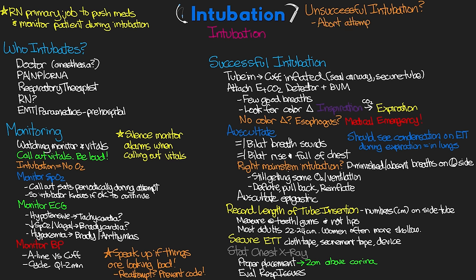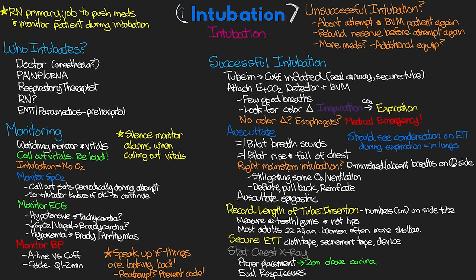In cases of unsuccessful intubation, abort the attempt and resume bag valve masking the patient to rebuild the reserve used up during the attempt. This may take a few minutes, and additional medication may be needed. Additional equipment such as the GlideScope or bougie may be requested if not already used, and anesthesia may be called. If the intubation is unsuccessful and the patient is crashing or coding, a more extreme measure such as a crike may be taken — this is rare, but I plan to discuss it in a future lesson.